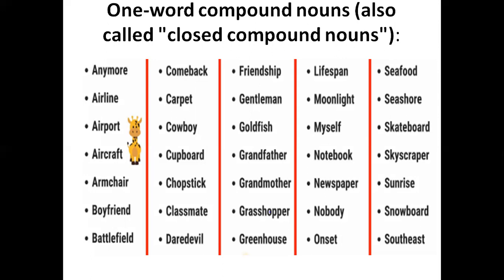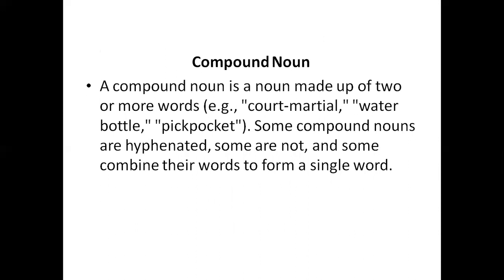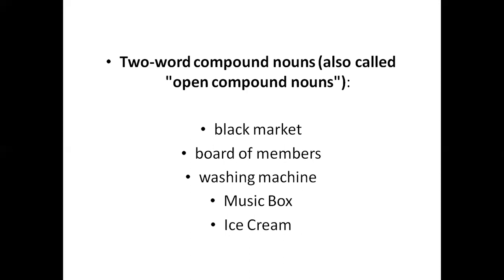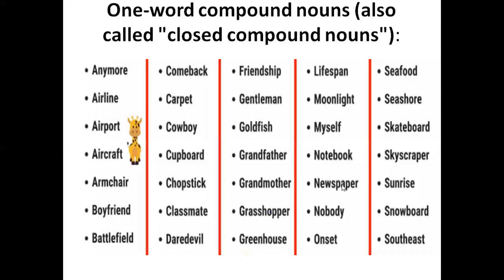The third type is one-word compound nouns, also called closed compound nouns. First we studied the definition of compound noun, then hyphenated compound nouns where hyphens appear between two nouns, then two-word compound nouns where the nouns are separate with no hyphens. The third type — one-word compound nouns — is when both nouns are combined into a single word with no separation.